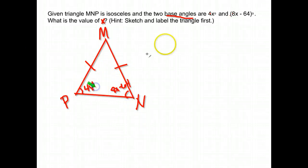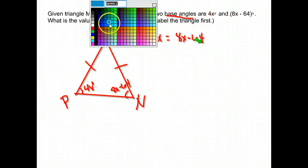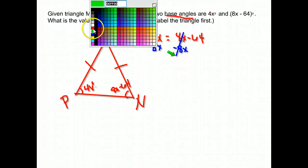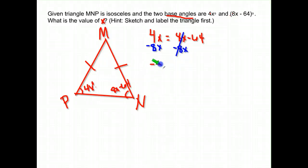The isosceles triangle theorem tells us if we have a pair of congruent sides, the angles across from those sides are also congruent. So I know 4x equals 8x minus 64. I can solve from there. I want to isolate the x—get it all on the same side. I have positive 8x, so I'll subtract 8x. 4 minus 8 leaves me with negative 4x equals negative 64.